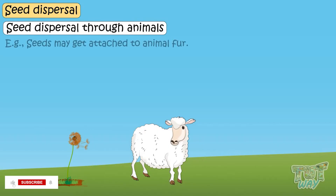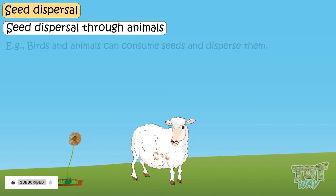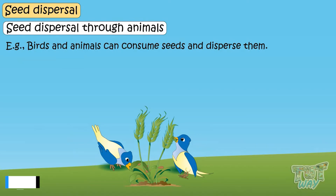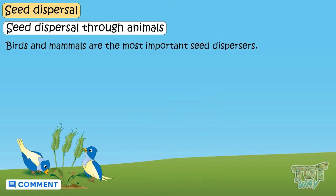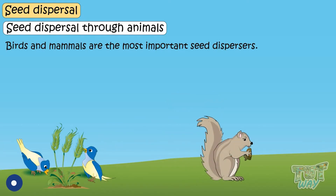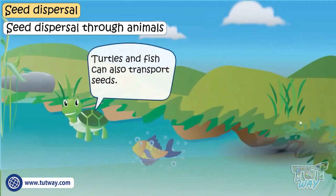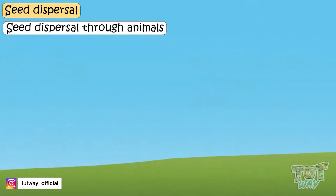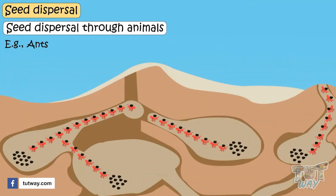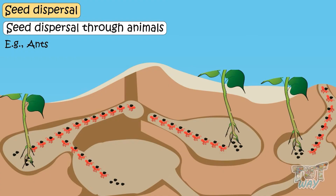Animals can disperse plant seeds in several ways. Seeds may get attached to animal fur, or birds and animals can consume seeds which are then dispersed through their waste. Birds and mammals are the most important seed dispersers, but turtles and fish can also transport seeds. Ants carry seeds into their colonies, feed on some of them, and leave others in underground chambers where they can germinate into new plants.